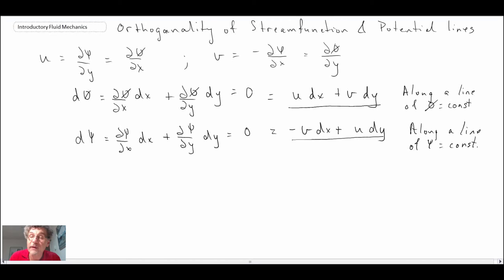So what we can do, we can look at the slope from these two equations, and the slope of dy/dx for a potential line is equal to minus u over v. And you can show that that is the negative reciprocal of the slope of a stream function line.